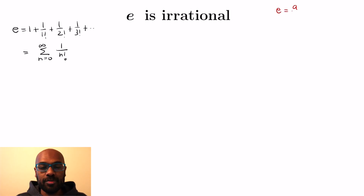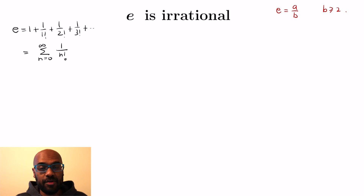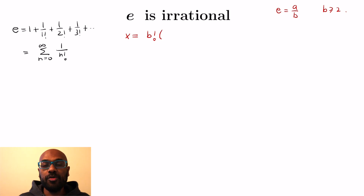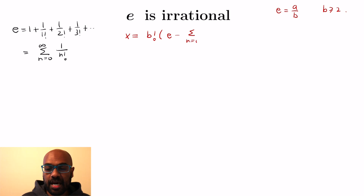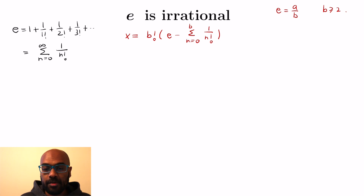So let's assume as a contradiction that e is some rational number. Now we know that if we put the rational number in lowest terms, the denominator is going to be at least 2 — because if the denominator were 1, we'd have an integer. To prove the rest of this, we're going to consider a really interesting number. We'll take e, peel off the first b plus 1 terms in the power series expansion — from n equals 0 to b — and multiply that quantity by b factorial. We'll call that x.